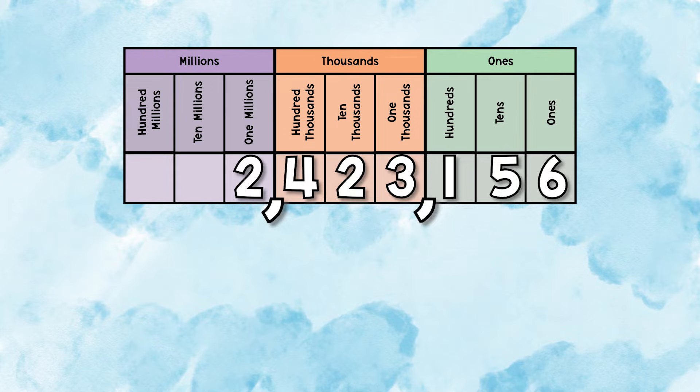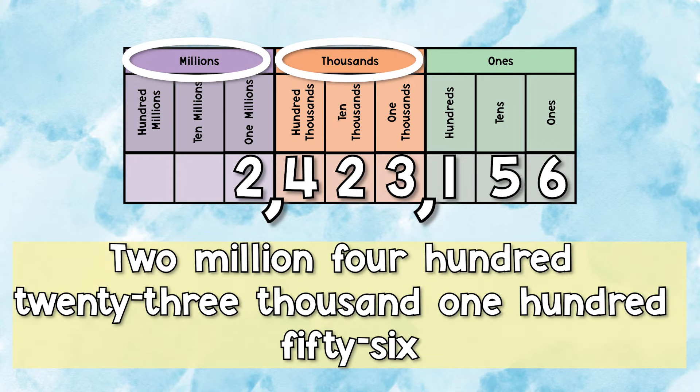Alright, last one. Now we have two commas. The first one's in the millions place and the second one's in the thousands place. So you would read this number as 2,423,156.